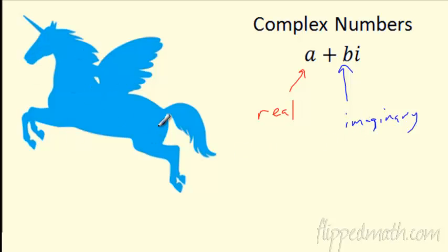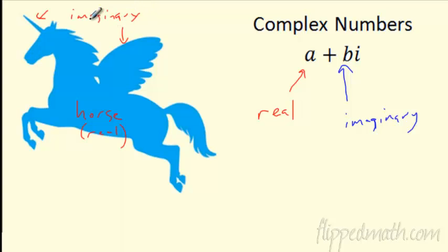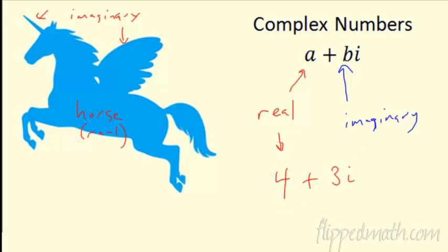I like to think of a unicorn here. The horse part of a unicorn is real — that is the real part. But when I start looking at the horn and the wings, that's imaginary. I don't think unicorns really exist — so that's the imaginary part. A unicorn is complex — part real, part imaginary. Complex numbers look something like 4 plus 3i. I've got the real part, and then the imaginary part with the i. I can't add them — they're not like terms, they're completely different.